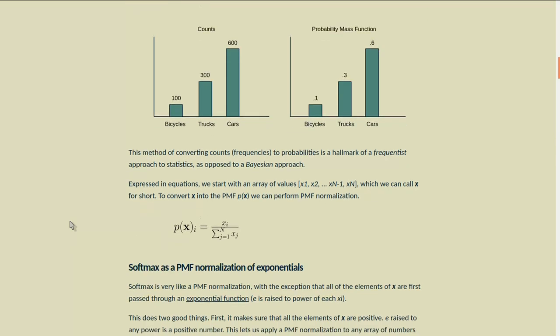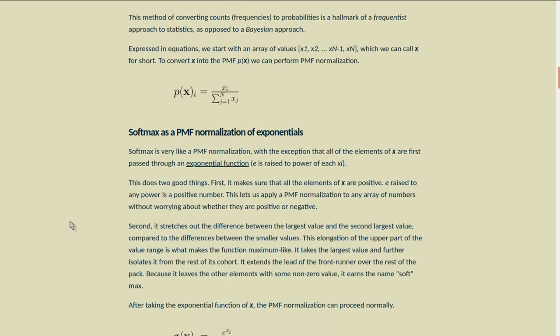This method of converting counts, or frequencies, to probabilities is a hallmark of the frequentist approach to statistics, as opposed to the Bayesian approach. Expressed in equations, we start with an array of values: x sub 1, x sub 2, etc., up to x sub n, which we can call x for short. To convert x into the probability mass function p of x, we can perform PMF normalization. That's p of x sub i equals x sub i over the sum of all the x's.